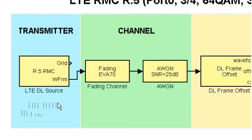control data, primary and secondary synchronising signals and cell-specific reference signals. In this demo, we will generate waveform R5, which uses 64-QAM modulation, code rate 3.25 and has a bandwidth of 3MHz.